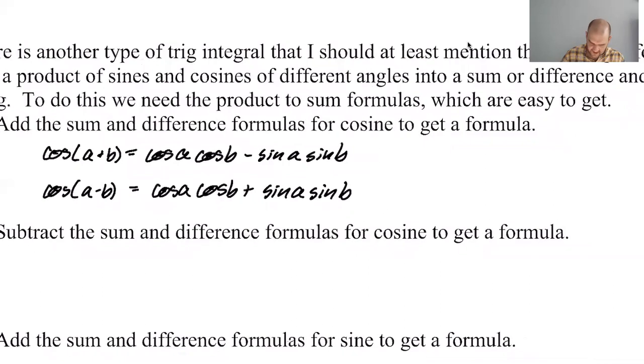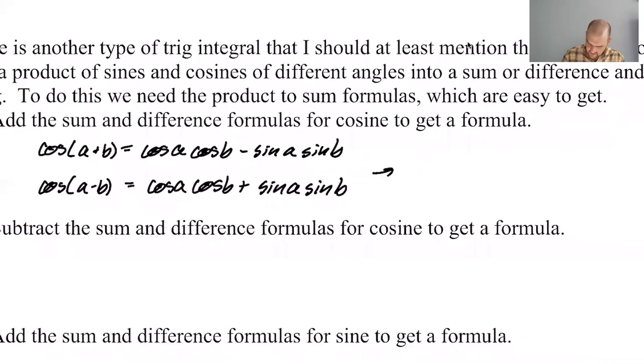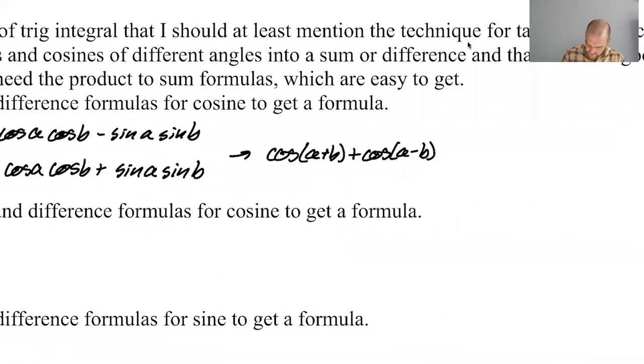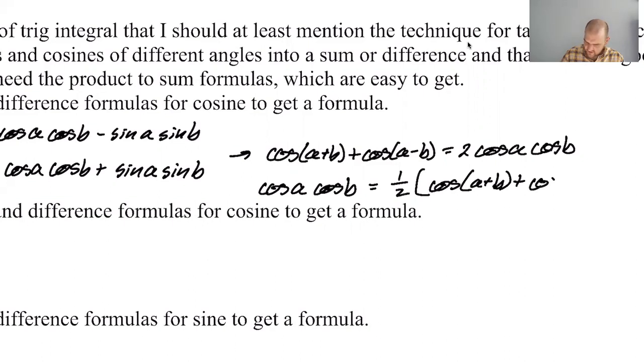So if I add those together, I'm going to get cosine of a plus b plus cosine of a minus b is equal to 2 cosine a cosine b, which means cosine a cosine b is equal to one half of cosine of a plus b plus cosine of a minus b. I can never remember these formulas, so I just derive them every time I need them.